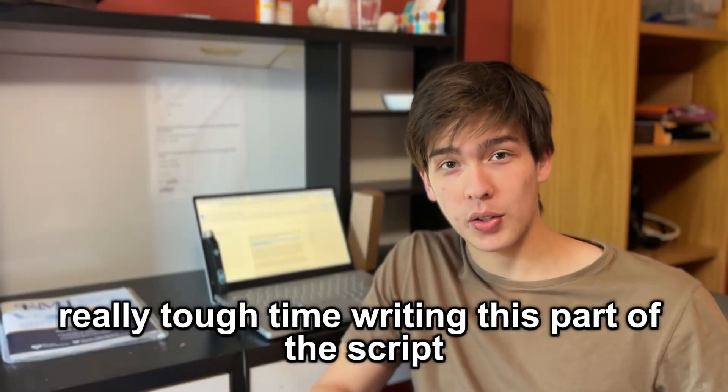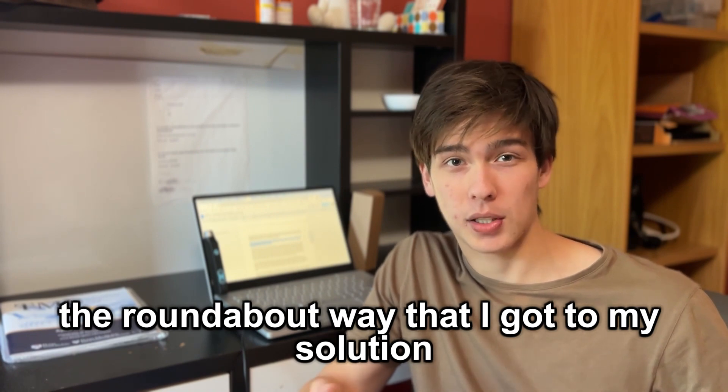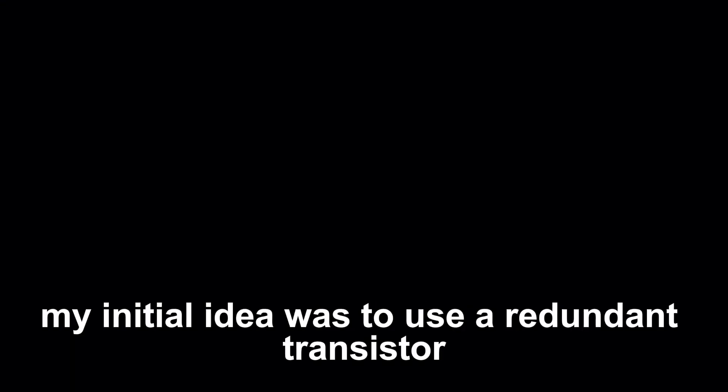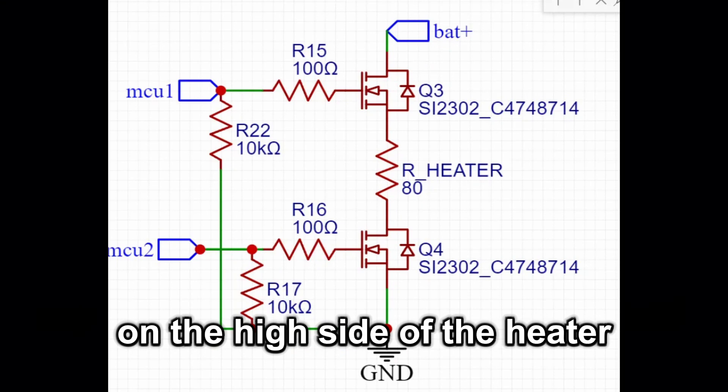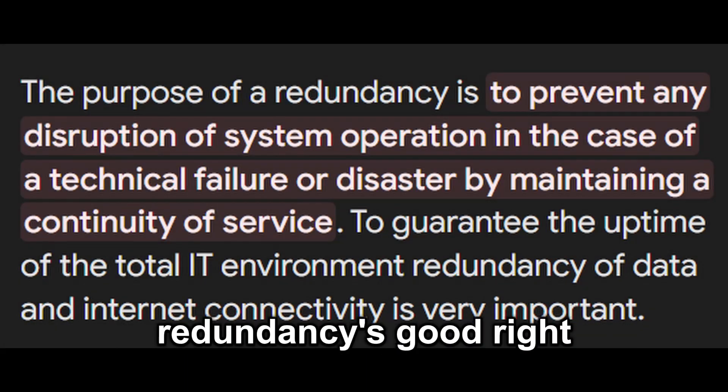I had a really tough time writing this part of the script because it's so hard to explain the roundabout way that I got to my solution. My initial idea was to use a redundant transistor on the high side of the heater. Now, this diagram is wrong since you'd need a P-channel FET. But you get the idea. Because redundancy's good, right?